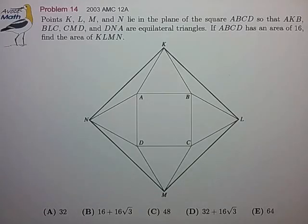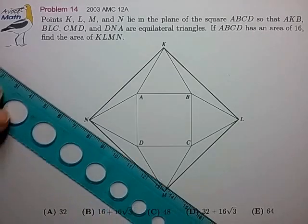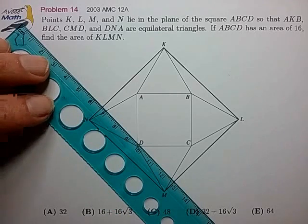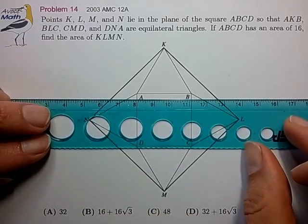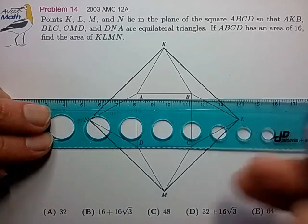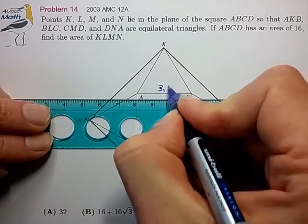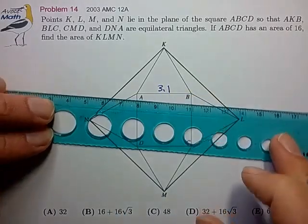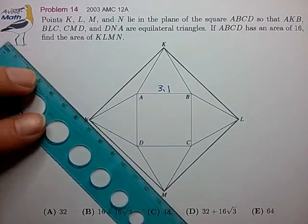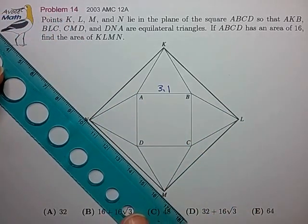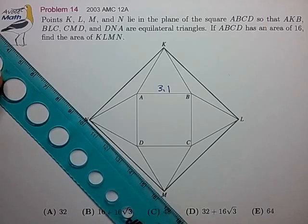But for our purposes let's see if we can make a quick estimate of the answer using some of the tips we talked about. So let's try to measure some of the lengths on this figure. Let's take a look at the length of the inner square. It looks like it's 3.1 centimeters in length and let's take a look at the length of the outer square. It looks like it's exactly 6 centimeters.